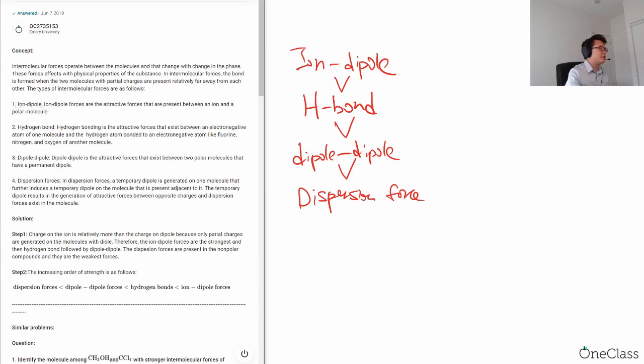Okay, first of all we have to look at the individual attraction. So what kind of attraction is this? Ion-dipole attraction will be the attraction force between ion and the dipole. So for example sodium ion and water.